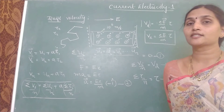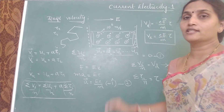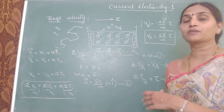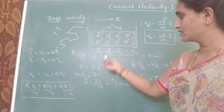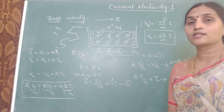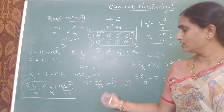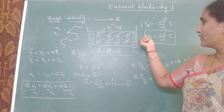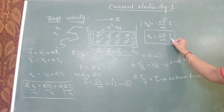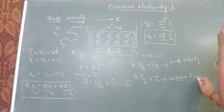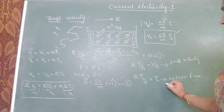What is the relation between drift velocity and electric current? This derivation is important for subjective exams — sometimes asked as a three-mark question: derive the expression for drift velocity of electrons. You will draw the figure, write the acceleration each electron experiences, state that the average velocity acquired by electrons in the presence of an external field is called drift velocity, define relaxation time as the average time interval between collisions, and arrive at V_d = (eE/m)·τ.